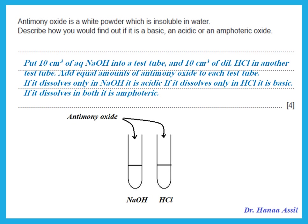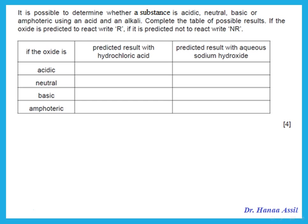This is the kind of experiment you describe when trying to find out if something is acidic, basic, or amphoteric. Complete the table of possible results using R for reacts and NR for no reaction. If the oxide is acidic, it reacts with base but not acid. If it is neutral, it doesn't react with either. If it is basic, it reacts with acid but not base. If it is amphoteric, it reacts with both.